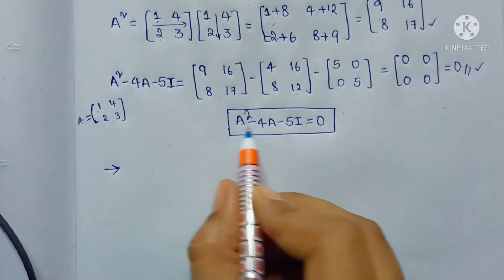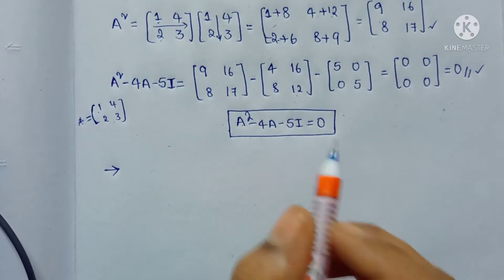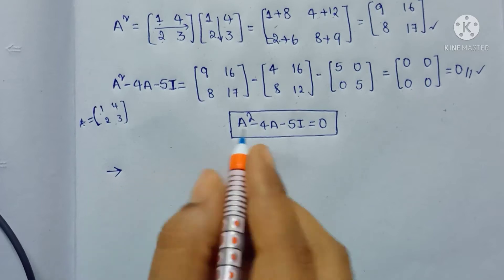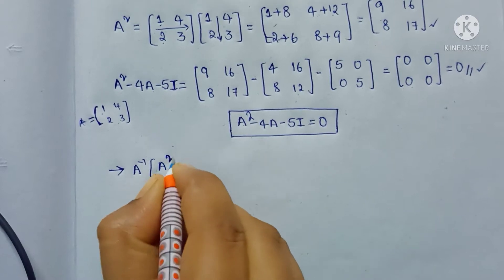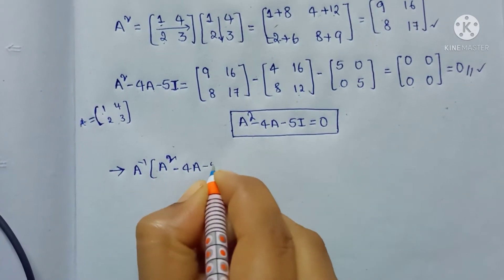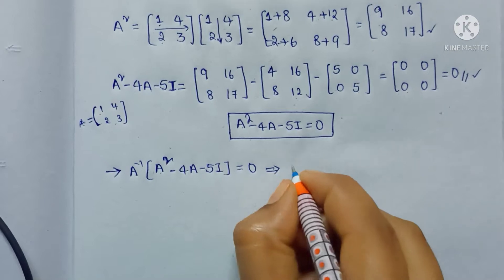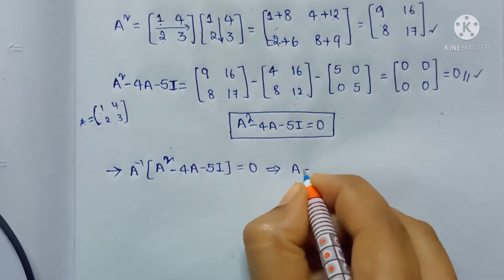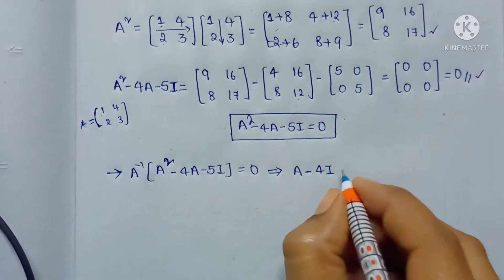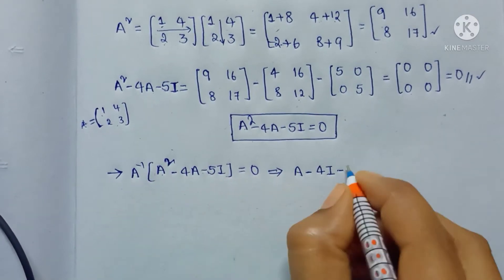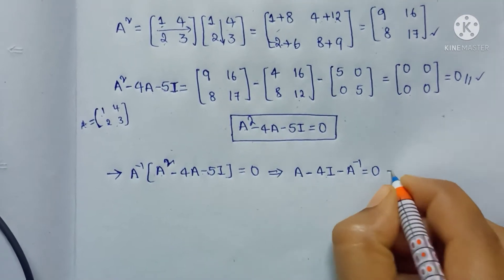If you see here we have A squared, A, and I. By multiplying with the matrix A inverse we get the A inverse value. A inverse into this matrix, that is A squared minus 4A minus 5I, which is equal to 0. Here A inverse into A squared gives A to the power 1, minus 4 into A into A inverse which is the identity matrix, minus 5 into identity matrix into A inverse gives A inverse, which is equal to 0. Now from here we get the A inverse value.